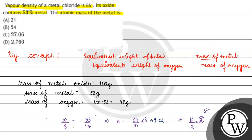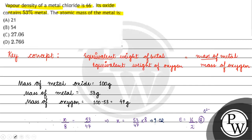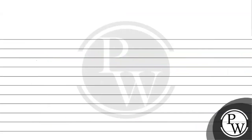Now we have the equivalent weight of the metal as 9.02. We need to find the atomic mass of the metal. For this, we use the metal chloride data. The molecular mass of metal chloride is 2 times vapor density, so 2 times 66 equals 132 grams per mole.